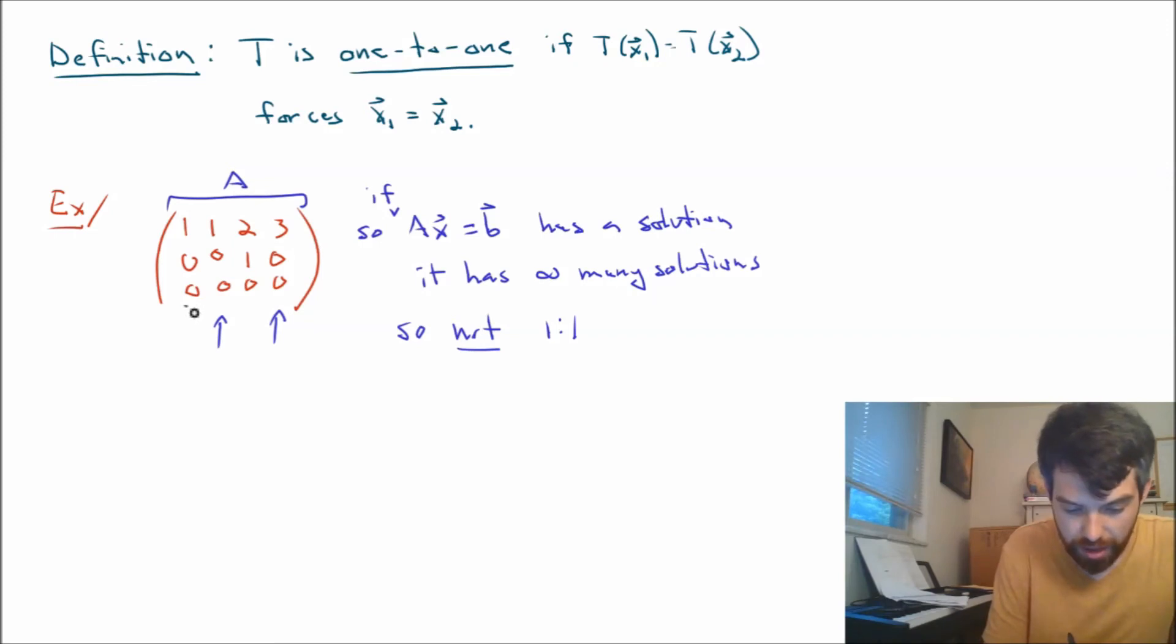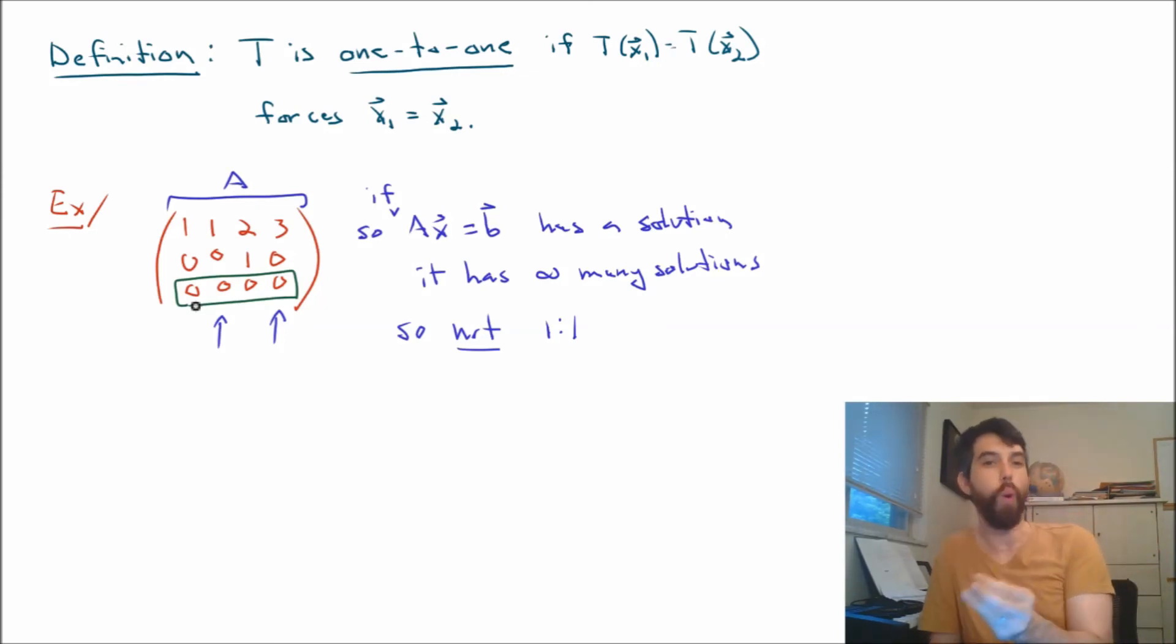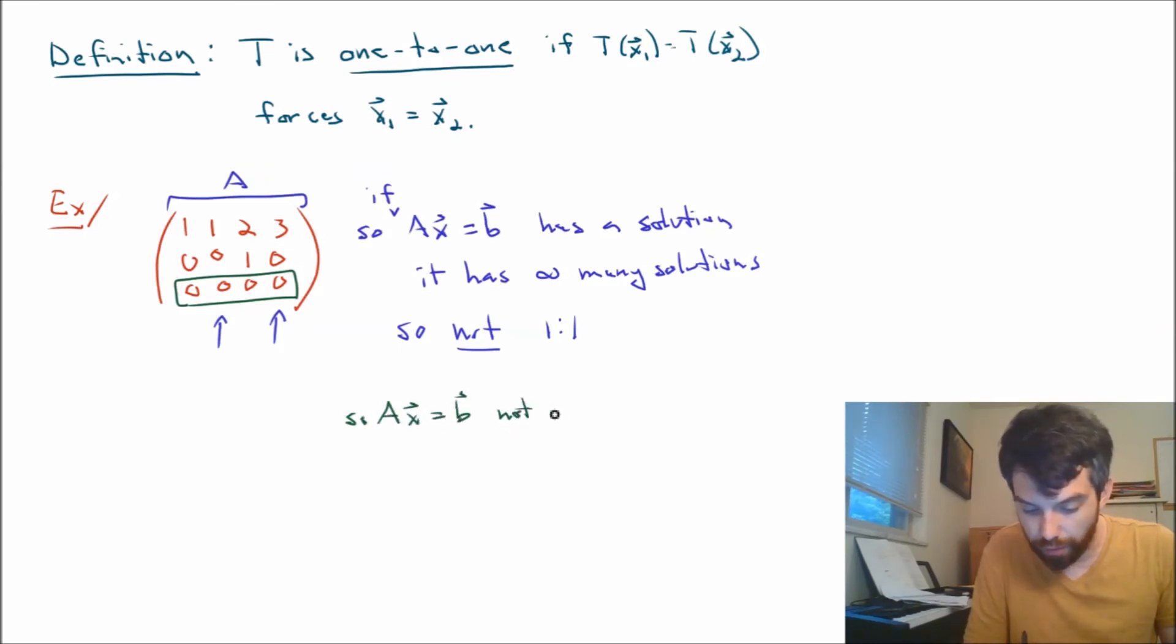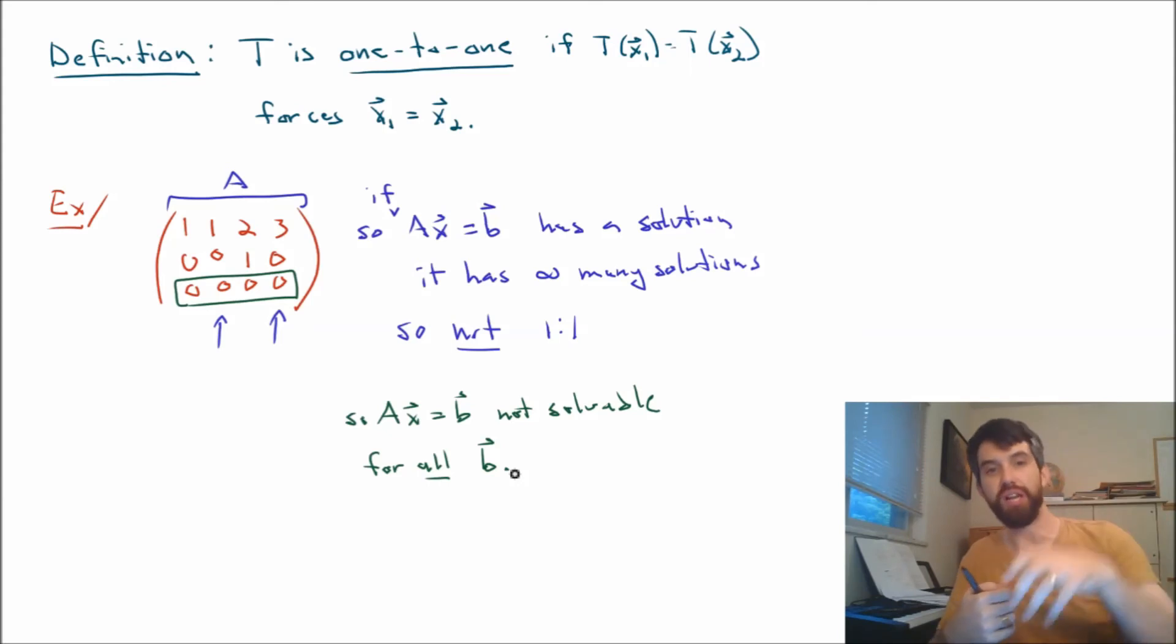However, I'm also going to note that because of this row of zeros that I have down here, that in fact, not all b's are going to be satisfied. If you can imagine, if you had a b that had a one in that third component, then Ax = b is not solvable. So in other words, Ax = b is not solvable for all values of b, only some values of b. In other words, I cannot transform vectors into every single output, and so it is not onto.